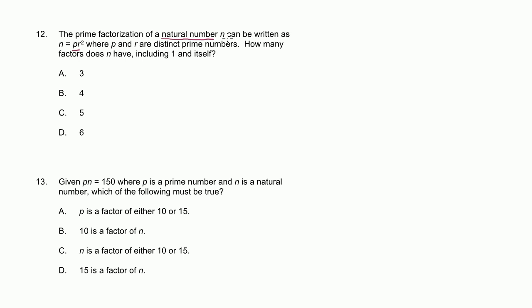They're saying that this is some natural number that can be written this way. Let's just pick one example. If we set p equal to 2 and r equal to 3, then n equals p times r squared, which is 2 times 3 squared, which is 2 times 9, which equals 18. This is just one instance, one n that satisfies these conditions.